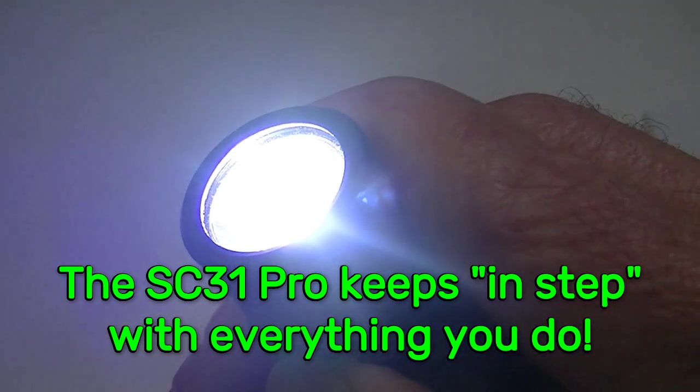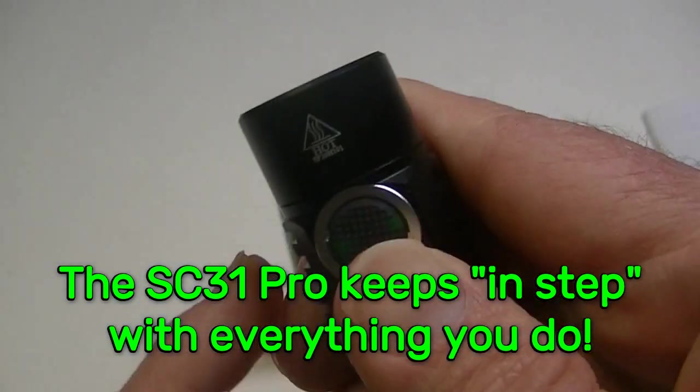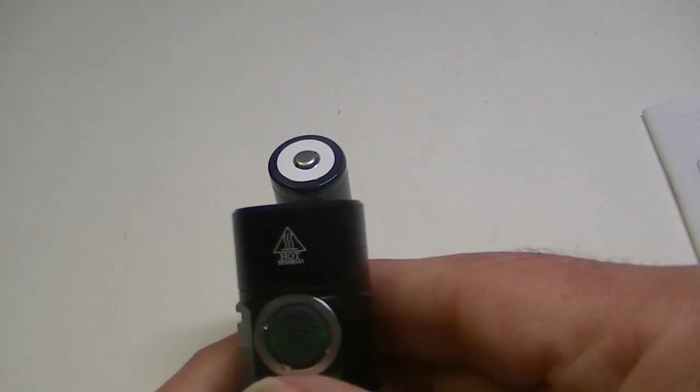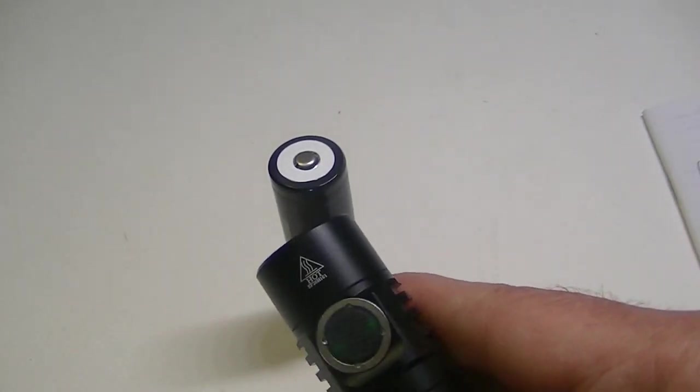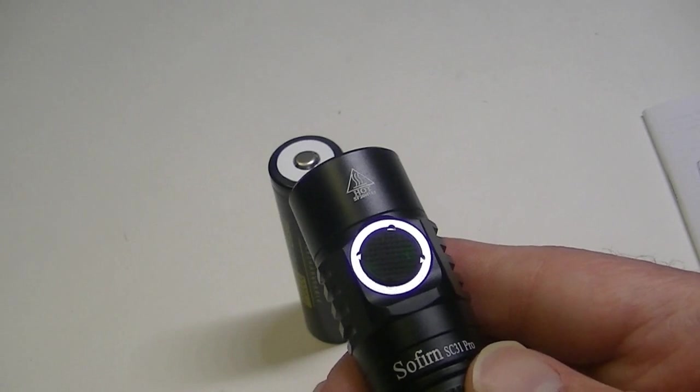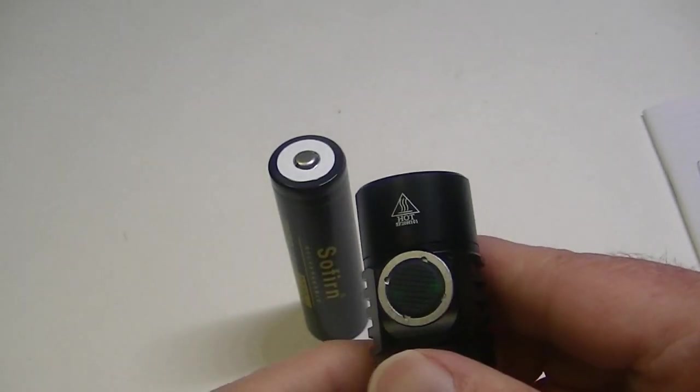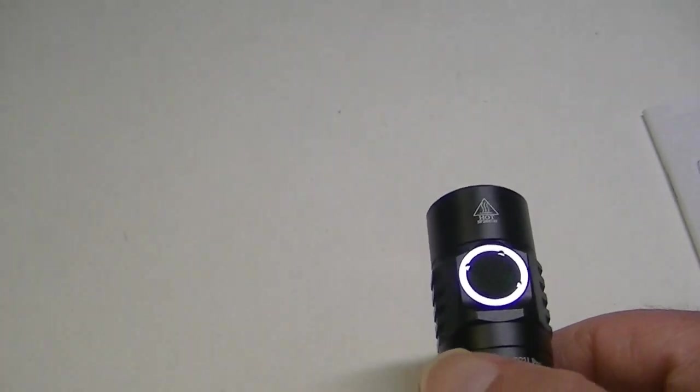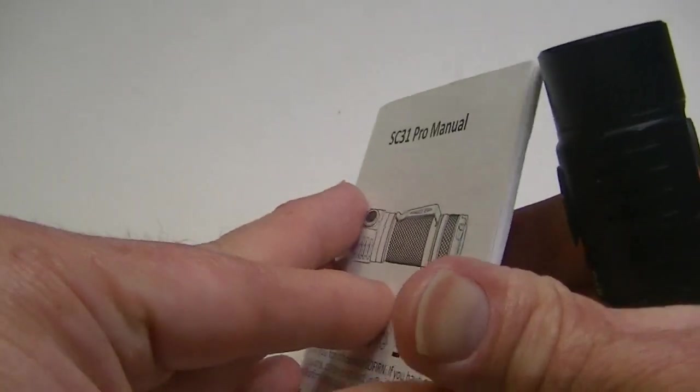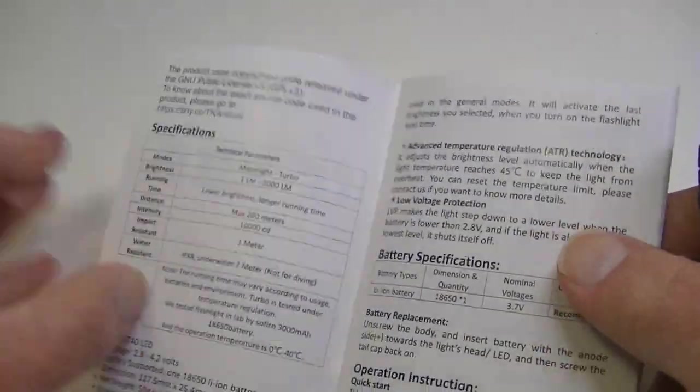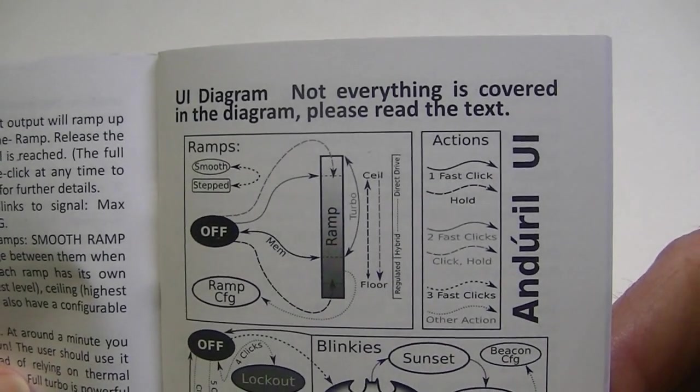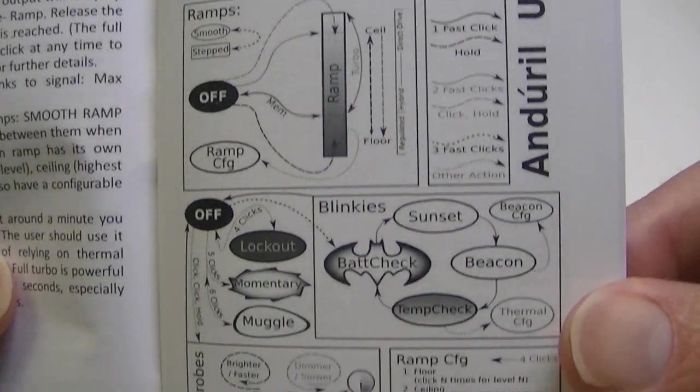So let's turn the light off here. I mean, of course, there are all kinds of settings on here with the firmware that you can do. And if you've seen any of my other videos using the Anduril, you'll know what I'm talking about. I will just briefly open the manual here for a second. Here is the little schematic diagram which they give, which just gives you a very quick overview of what you can do.